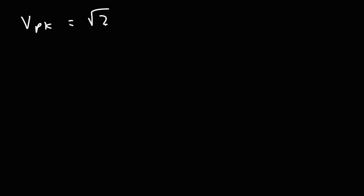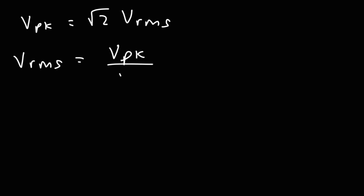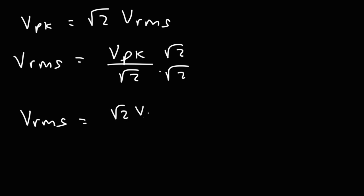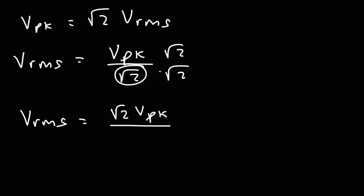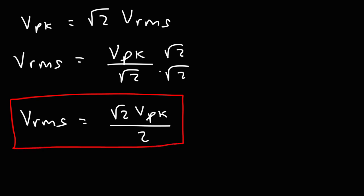The peak voltage is equal to the square root of 2 times the RMS voltage. If we divide both sides by the square root of 2 and reverse the equation, the RMS voltage is going to be the peak voltage divided by the square root of 2. If we multiply the top and bottom by the square root of 2, we get the RMS voltage equal to the peak voltage times the square root of 2 over 2, since the square root of 4 is 2.